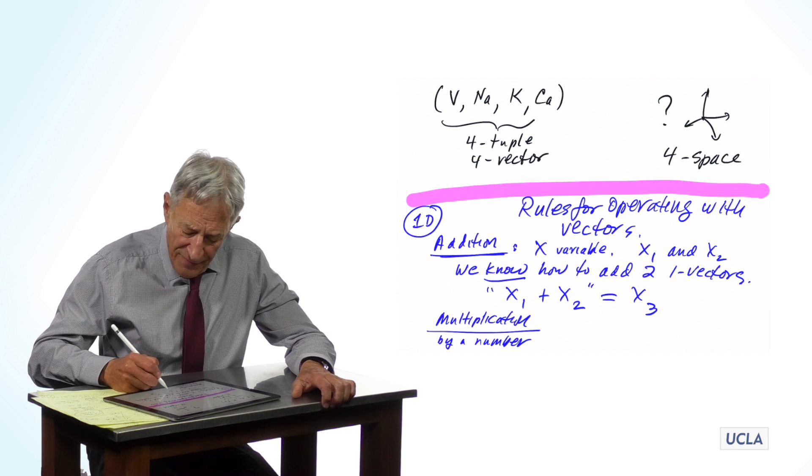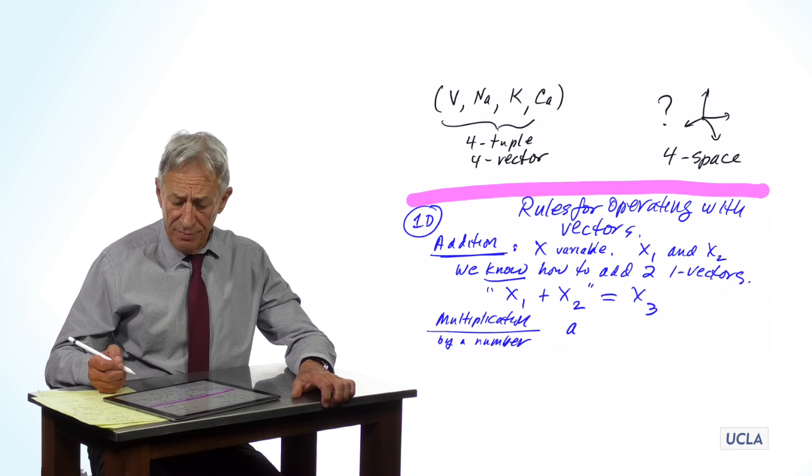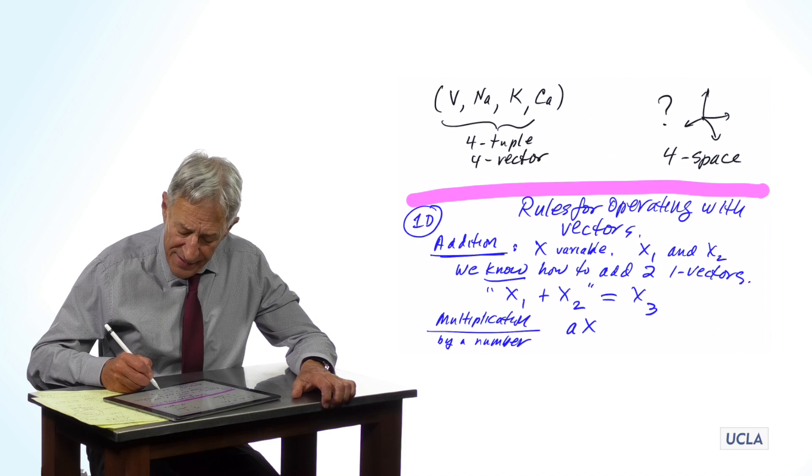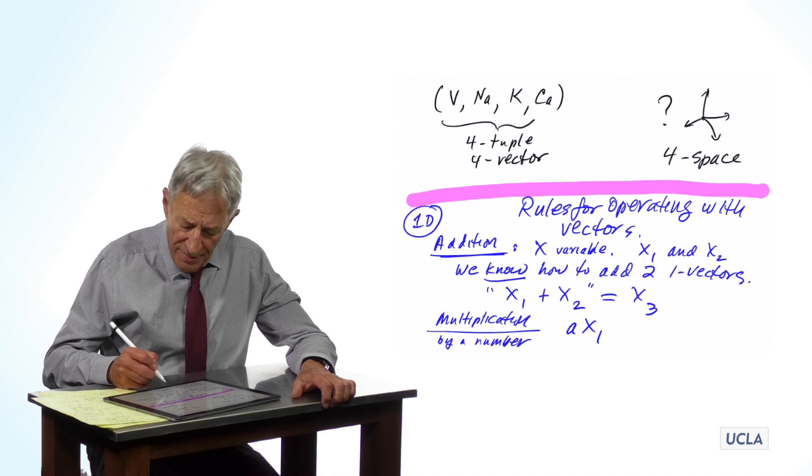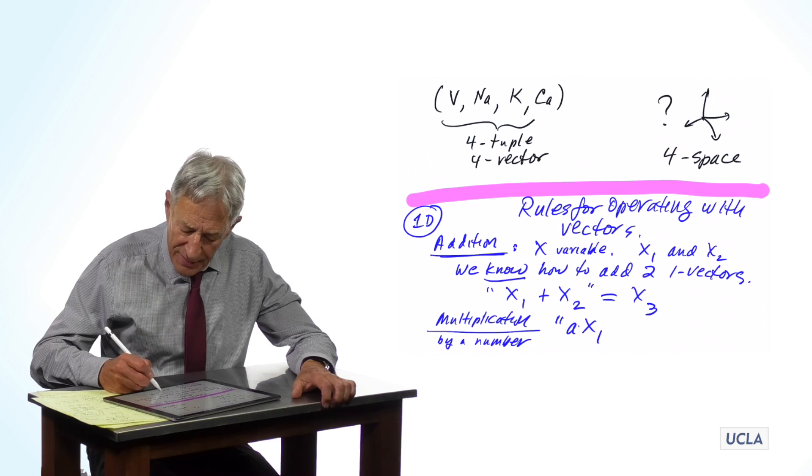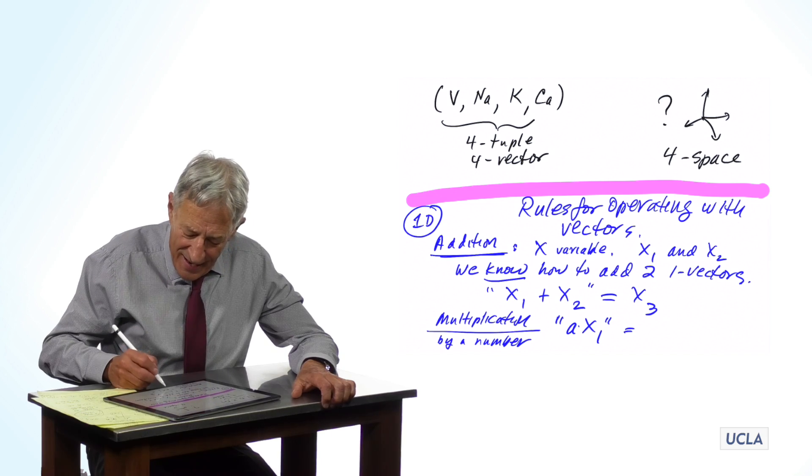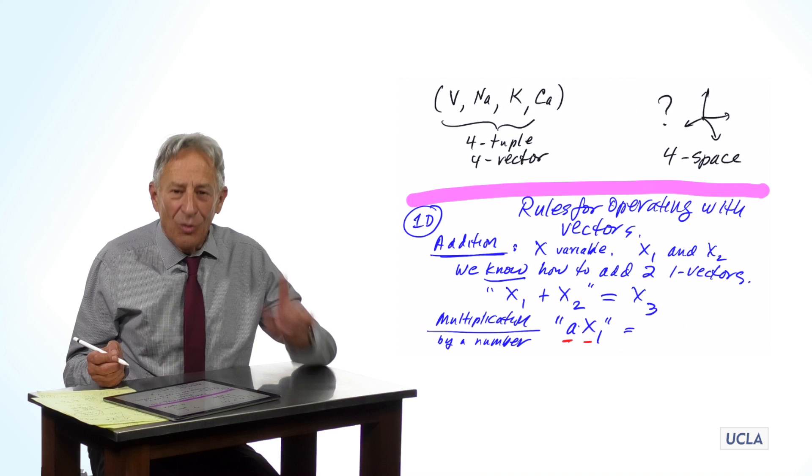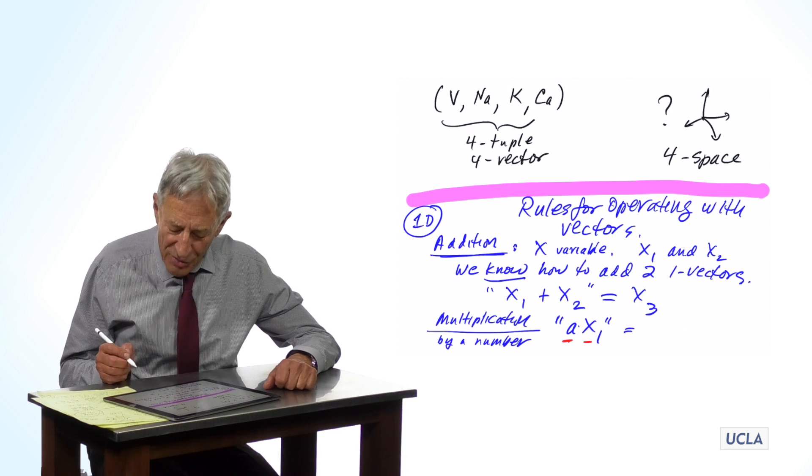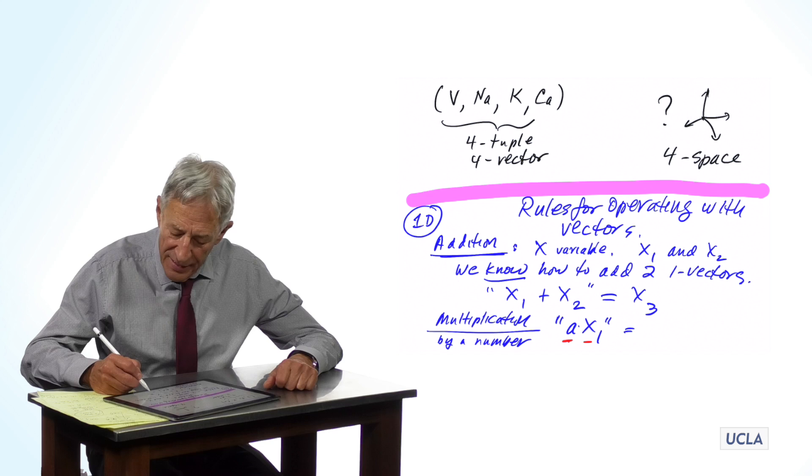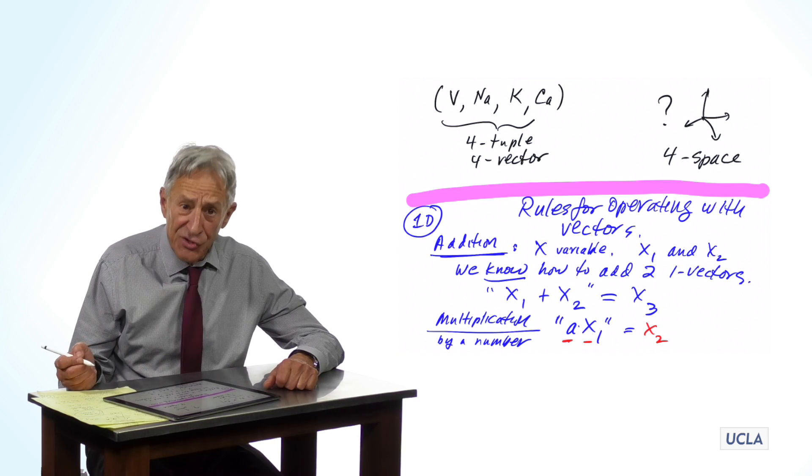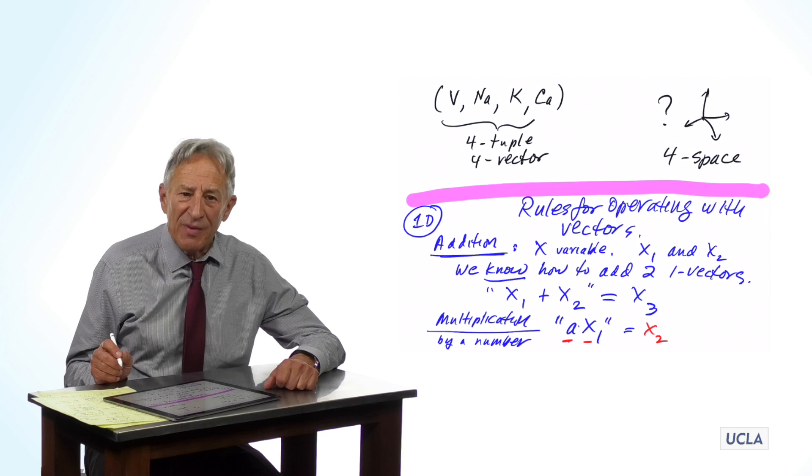We do multiply vectors by numbers. And so, if a is a number and x1 is a vector, then we claim we understand the product a times x1 again, because we know how to multiply a number by a number. This a is a number. This x1 is a number. We know how to multiply two numbers. And so, a times x1 is going to be some other vector x2. And that's also going to be an element of the space.